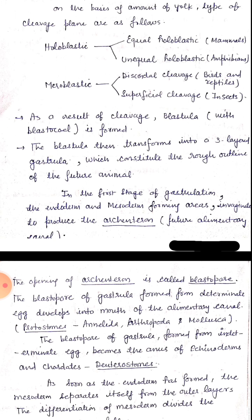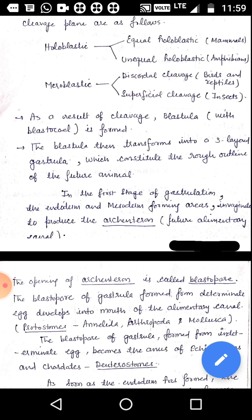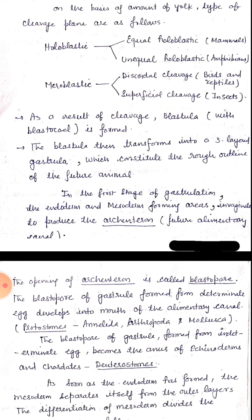Meroblastic means incomplete cleavage. It is again of two types: first is discoidal, and second is superficial cleavage. Discoidal type is present in birds and reptiles, in which active cytoplasm is present in the form of a disk. While in superficial type of cleavage, the active cytoplasm is present towards the periphery of the egg only. As a result of cleavage, a blastula is formed.